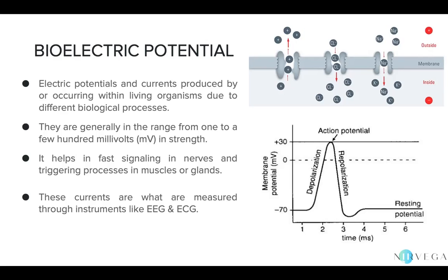Now, why is this concept important? Bioelectric potential forms an integral part of how signals are sent from one cell to another in our body. Earlier, when we spoke about the cell membrane, we discussed how different materials cross from the extracellular space — the outside of the cell — to the intracellular space — the inside of the cell. Bioelectric potential is a very effective way of communication between cells, especially in the nervous system.